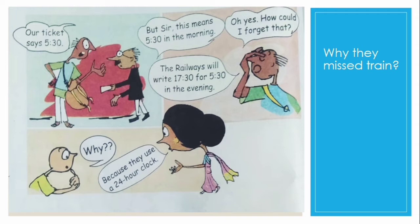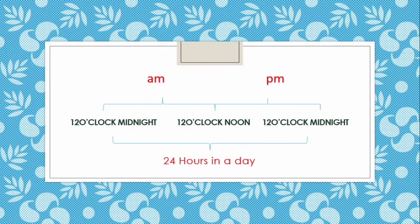Tuntun asked, 'Mom, what is AM and PM?' We divide a day into 24 hours, but on a clock we see only 12 hours. To avoid confusion, we use AM for the timing between 12 o'clock midnight to 12 o'clock noon, and we use PM for the timing between 12 o'clock noon to 12 o'clock midnight.